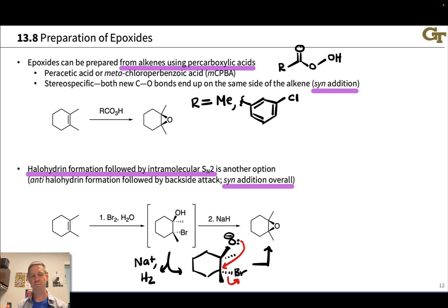As in the peracid method above, this is an overall syn method. Although the halohydrin formation is anti, the SN2 step occurs with inversion of configuration as usual, and so the epoxide oxygen will end up with two new bonds to the epoxide carbons on the same side of the original starting alkene. So these two approaches, by and large for our purposes, are interchangeable, but you may see both in Organic Chemistry 1.